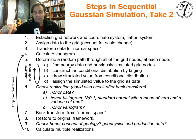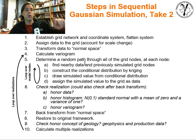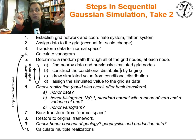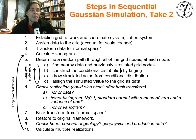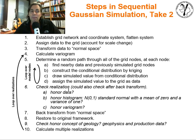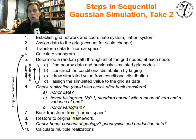Go to the very first location. Find any data within a search neighborhood and any previously simulated nodes. Construct a conditional distribution by using kriging. Draw simulated values from the conditional distribution — that's Monte Carlo simulation. Assign the simulated value to the grid as data. Loop to the next location. Keep going until you fill the grid up. Step number six is just checking: after you fill the grid up, do you honor the data? Honor the histogram — should be standard normal at this point. Do you honor the variogram? Once you're good with it, back transform from normal space back to the original distribution.